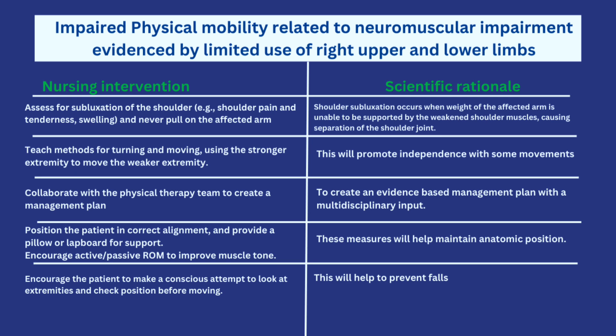Collaborate with physical therapy and the physiotherapy team to create a management plan, because these experts create evidence-based management plans with multidisciplinary input. Position the patient in correct alignment and provide a pillow or lap board for support. Encourage active and passive range-of-motion exercises to improve muscle tone — these measures help the patient maintain an anatomical position. Also encourage the patient to consciously look at extremities and check positions before moving, so they don't trip and fall.